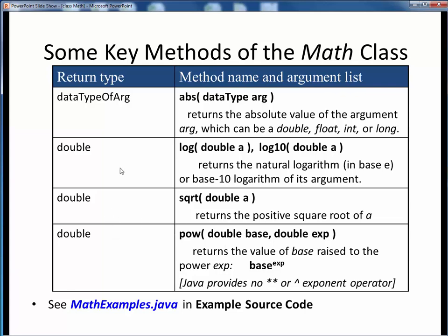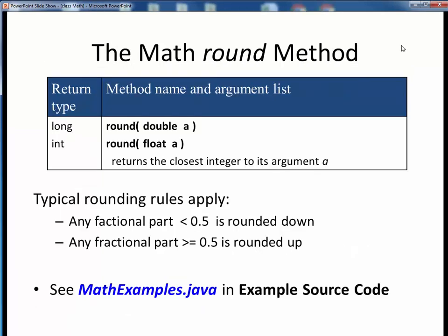Besides, it doesn't really make sense to compute these in anything less than decimal precision, anyway. Also, note that Java provides the pow method for raising a number to some power, because it doesn't provide any exponentiation operator like these, as do some other programming languages. Again, I will refer you to the mathexamples.java source code file, or its accompanying code walkthrough video, for good examples of using these methods.